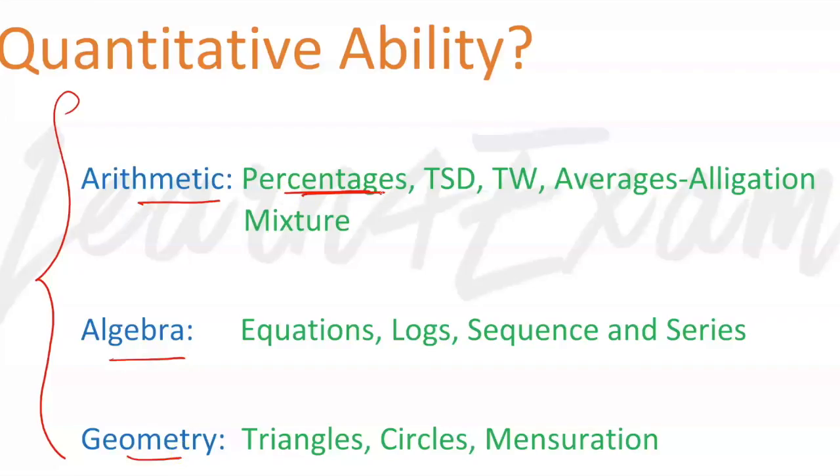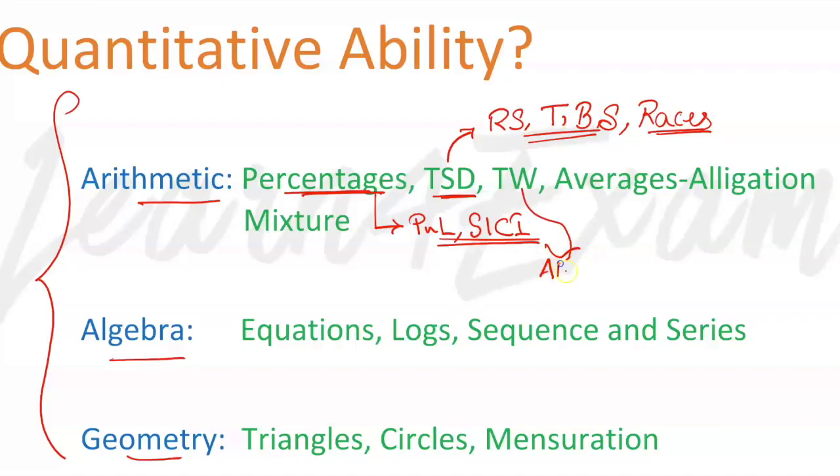The first thing is percentages in arithmetic, so in percentages you would be having normal percentages, profit and loss, SI/CI, and all those chapters. Time, speed, and distance is a very important chapter in which questions from relative speed, then trains, boats and streams—these questions are also very important. Races is another concept from which questions regularly appear. Time and work, in which you have normal work, alternating work, negative work, are some important areas to focus. Apart from that, averages, allegation, and mixture is something really very important. Questions based on mixtures, based on allegation, and questions which are based on replacement are very important. Please, this is a very important topic. Make sure you have a proper grasp of these concepts.